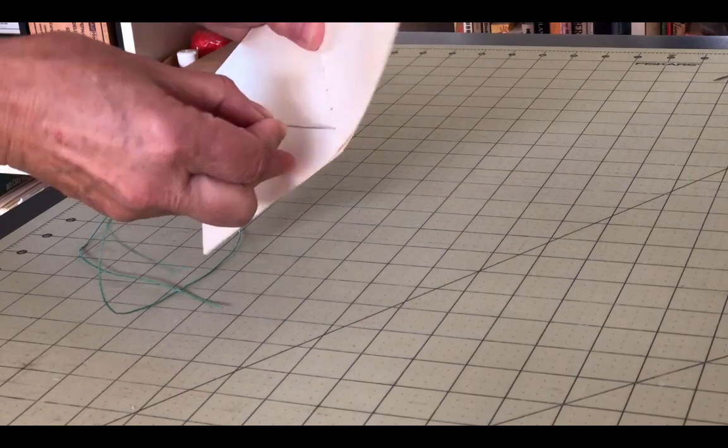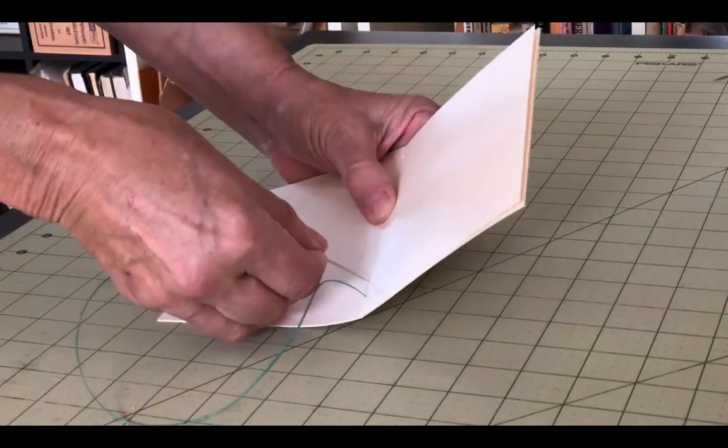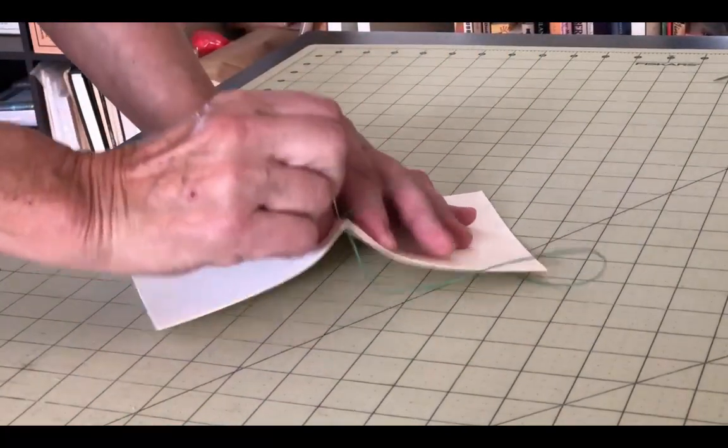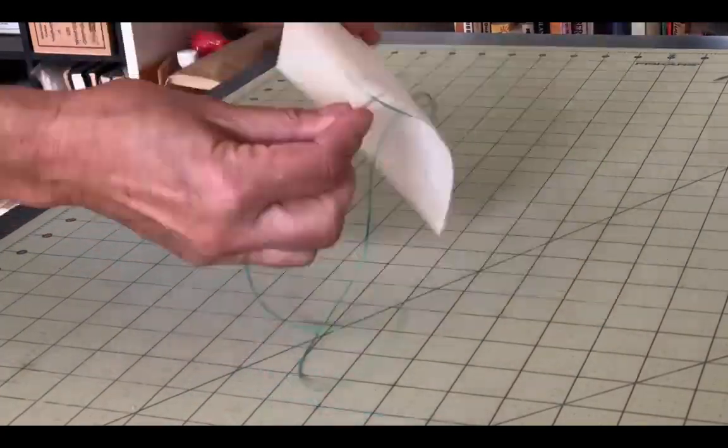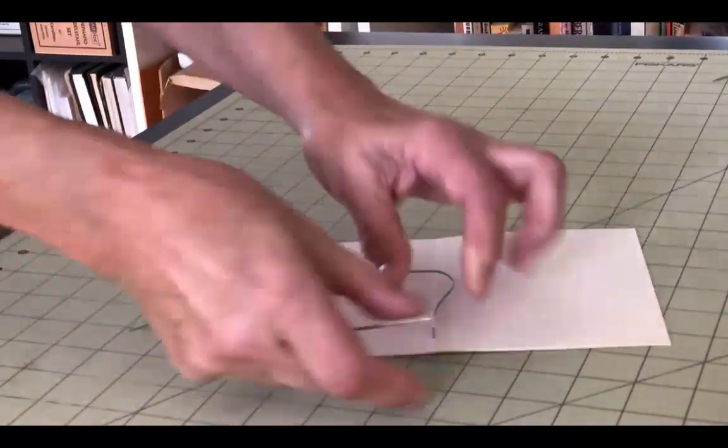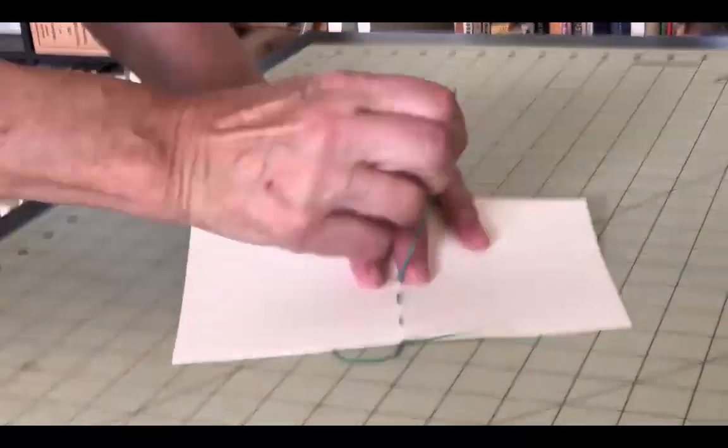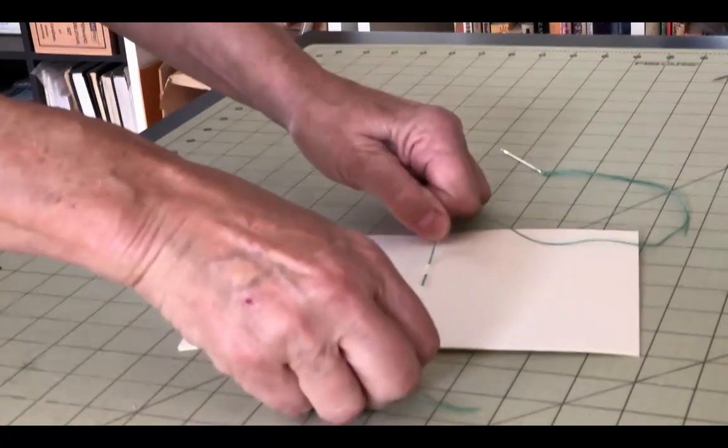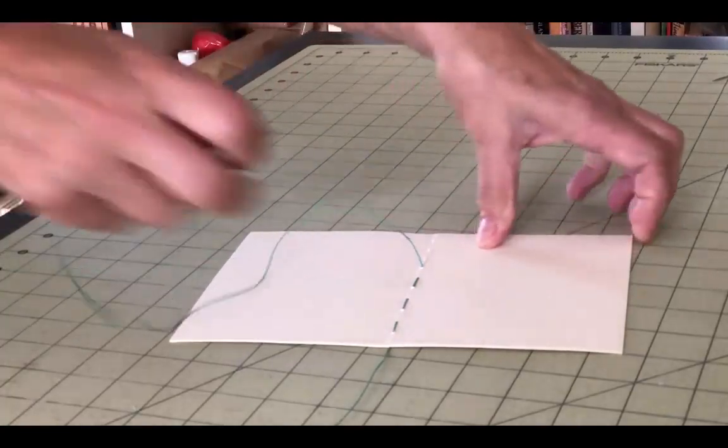Start sewing the first signature from the outside and make sure you leave a generous amount of thread as a tail. You'll need this later. Sew in and out of each pre-punched hole, ending up outside of the spine of the first signature. When tightening the stitches, pull parallel to the pages. If you pull up and out, you risk tearing the paper.